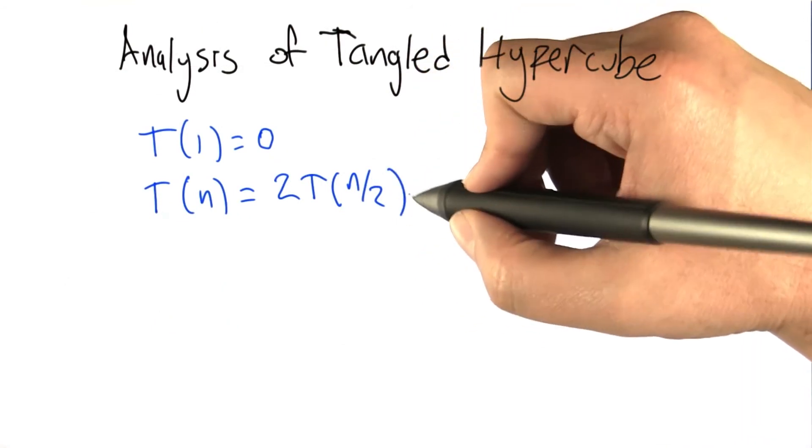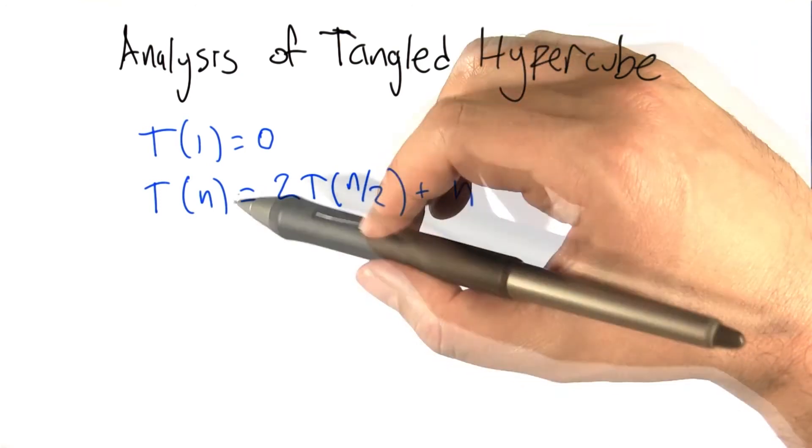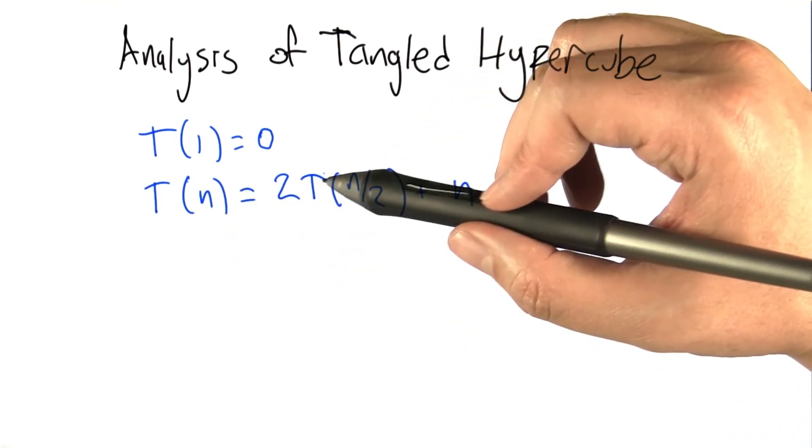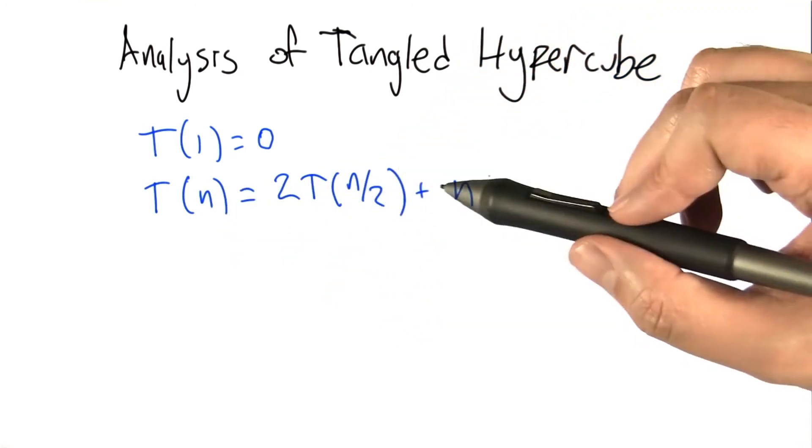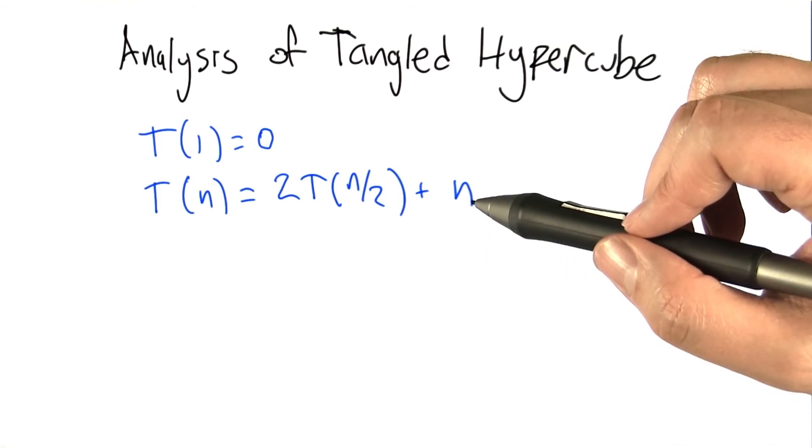We can express the number of edges in the tangled hypercube using a recurrence relation. The recurrence relation has this form: for an n node graph, we generate two n over 2 node graphs, connect up the parallel nodes, and that introduces n new edges.